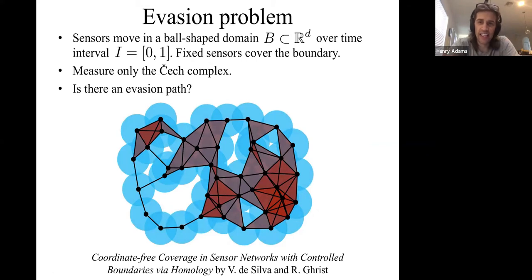In the static case, when the sensors weren't moving, we saw in the last video that you can solve this problem. In the static case, you're not asking for an evasion path that the intruder can walk along, you're just asking for a hole. And the intruder can just stand in that hole. You can look at one-dimensional homology to tell whether there's a hole or not that the intruder could stand in. It turns out that this problem gets a lot more subtle once the sensors are allowed to move.